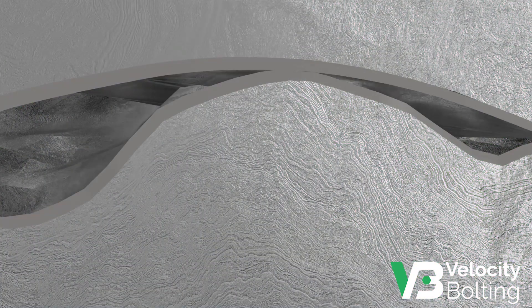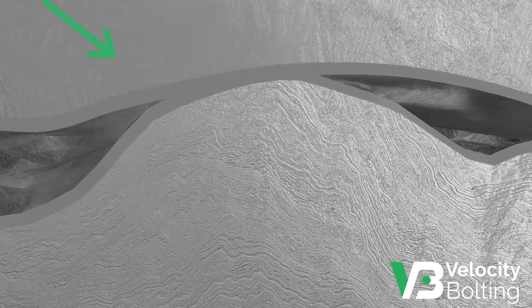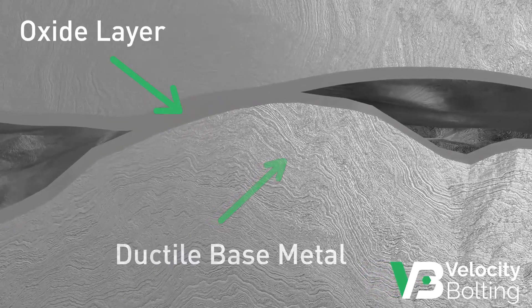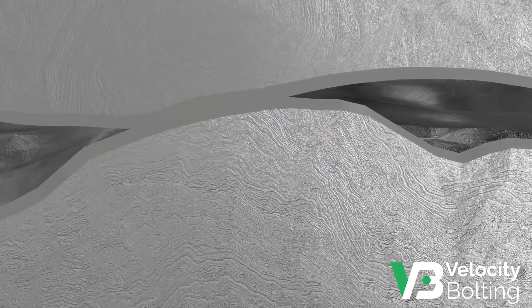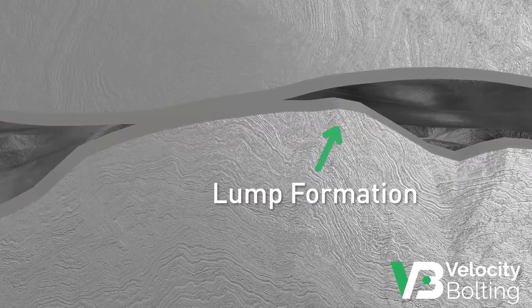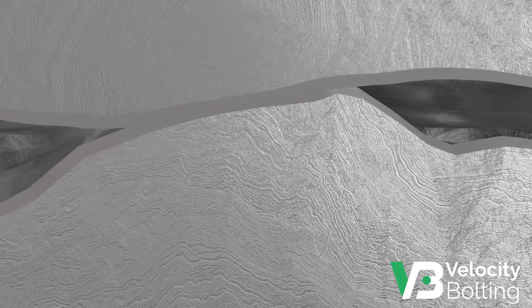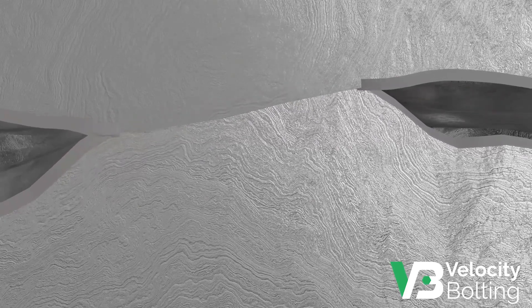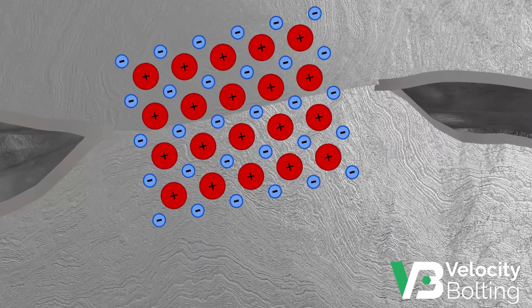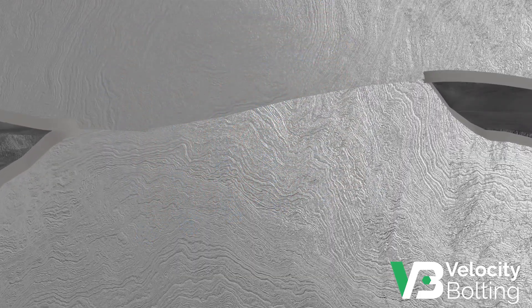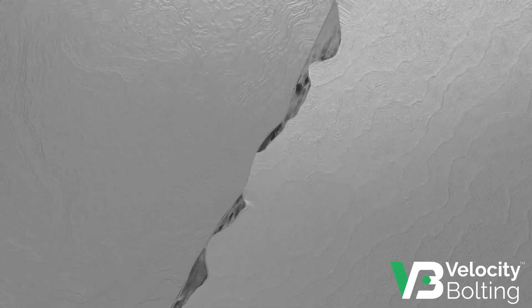As the nut turns, more of the brittle oxide layer is scraped away, exposing more ductile base metal in direct, high-energy contact and resulting in larger and larger lumps. Eventually, enough ductile base metal is in contact under such high-energy state that the nut and bolt start forming metallic bonds. They have become one part, as these bonds are no different than the metallic bonds throughout the rest of the structure.